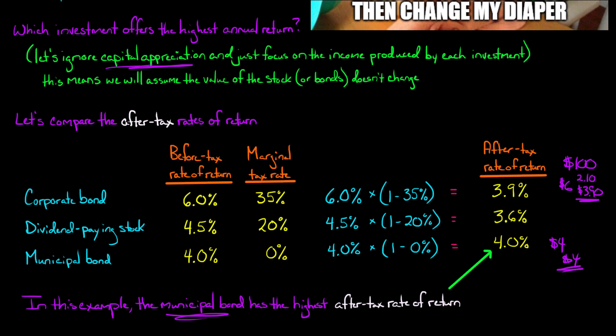That's why it makes sense: the corporate bond has a 6% before-tax rate of return and 3.9% after tax. Thomas earned $6 in interest but paid $2.10 in tax, leaving a take-home of $3.90. Meanwhile, with the municipal bond Thomas got to keep the entire $4 because it's tax-exempt income.